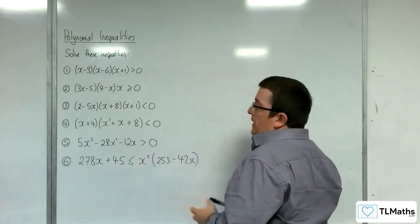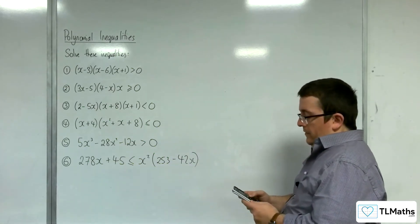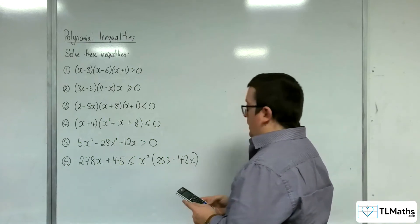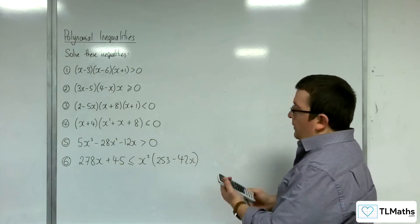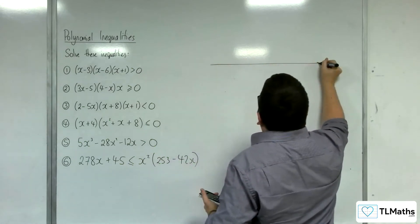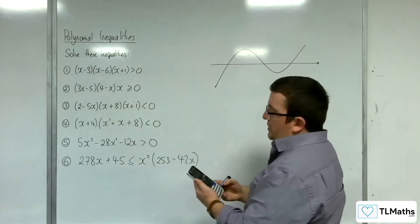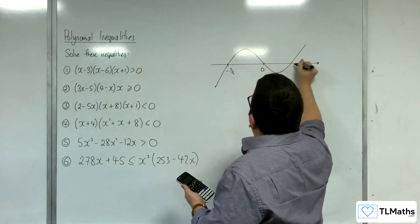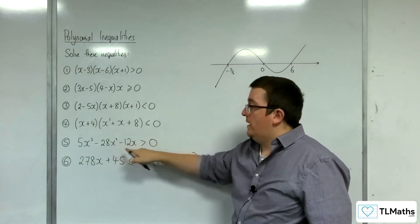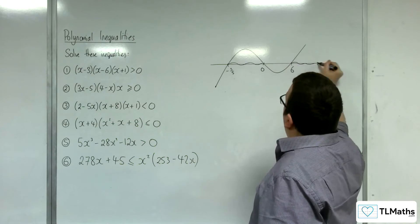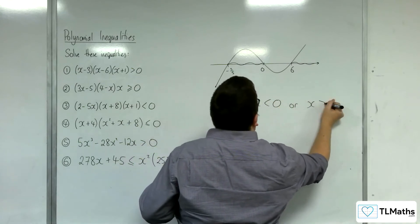Number 5 isn't factorised, so I can go straight in and use my cubic solver to solve the cubic. The coefficients are 5, minus 28, and minus 12. We're going to have a positive cubic crossing through at 6, minus 2 fifths, and 0 — so in order: minus 2 fifths, 0, and 6. Where is the cubic above the x-axis? It's above it there and there. So x is greater than minus 2 fifths but less than 0, or x is greater than 6.